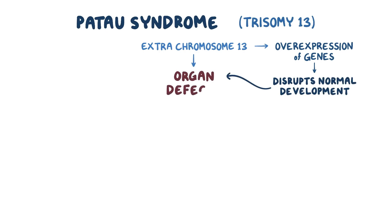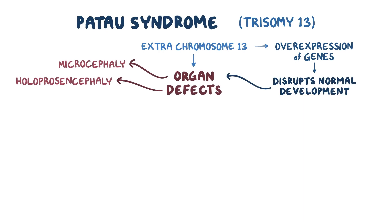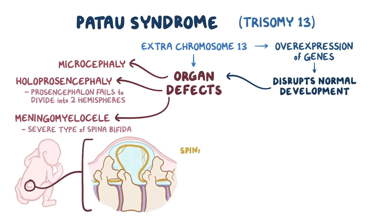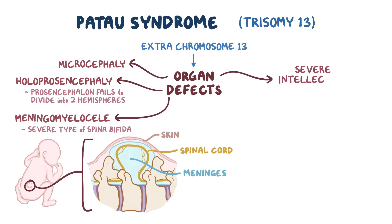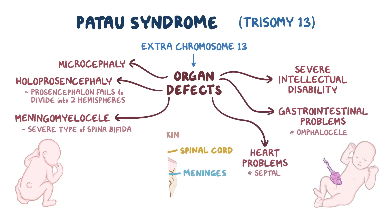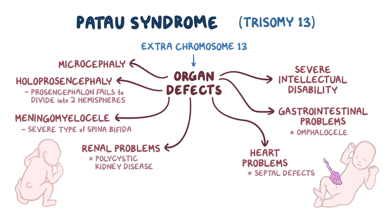Trisomy 13 is a chromosomal condition associated with heart defects, brain or spinal cord abnormalities, very small or poorly developed eyes, extra fingers or toes, a cleft lip, and a cleft palate. Due to the presence of several life-threatening medical problems, many infants with trisomy 13 die within the first days or weeks of life. Only 5% to 10% of children with this condition live past their first year.